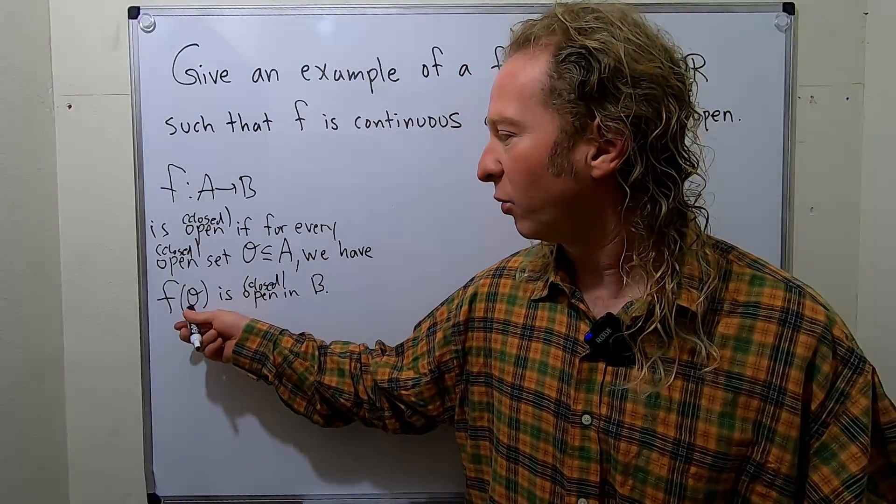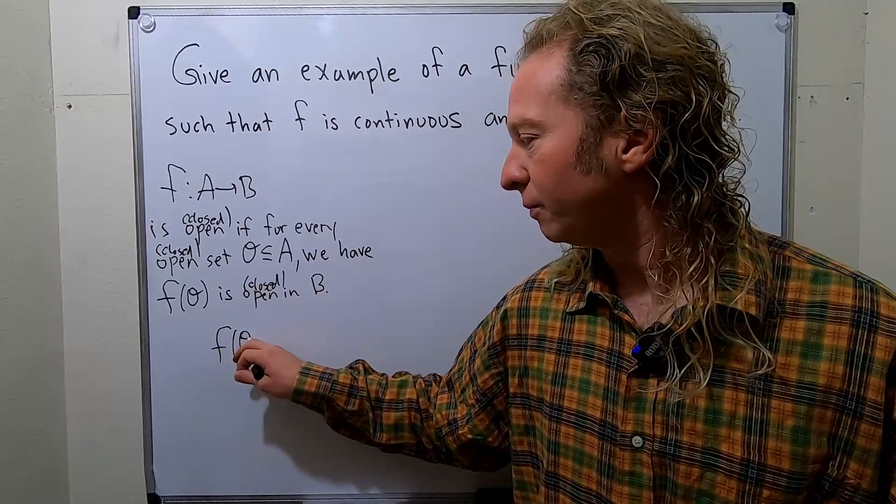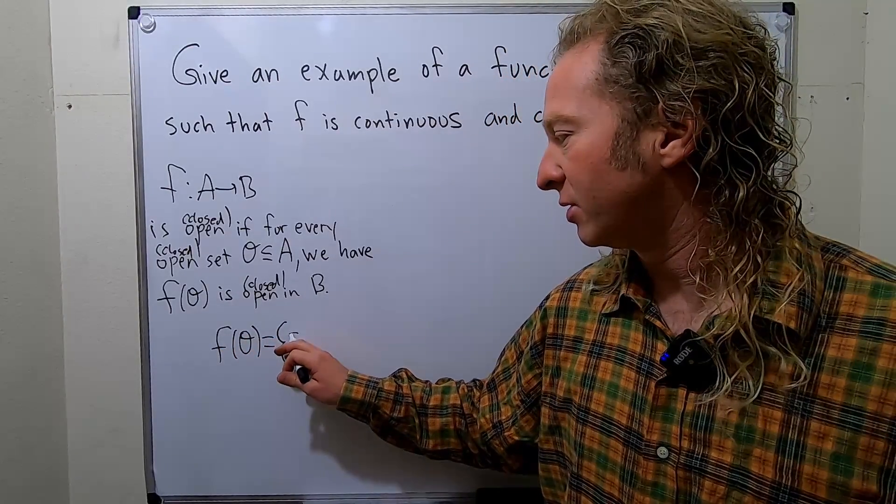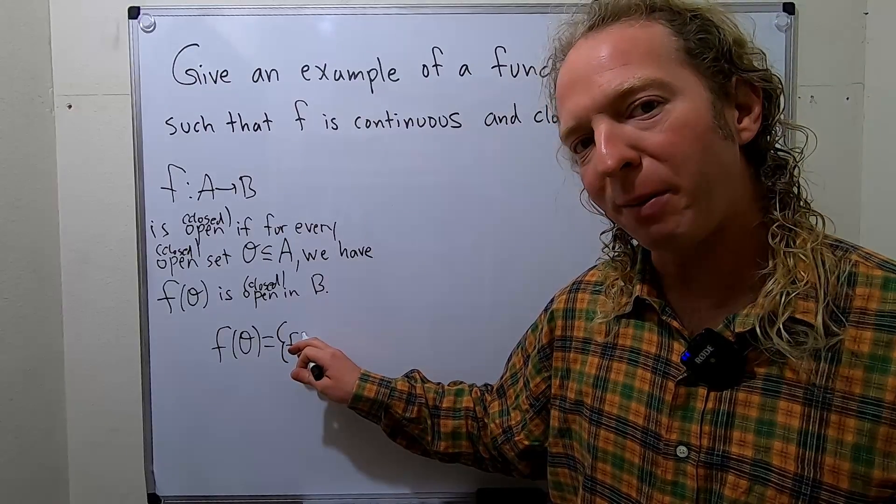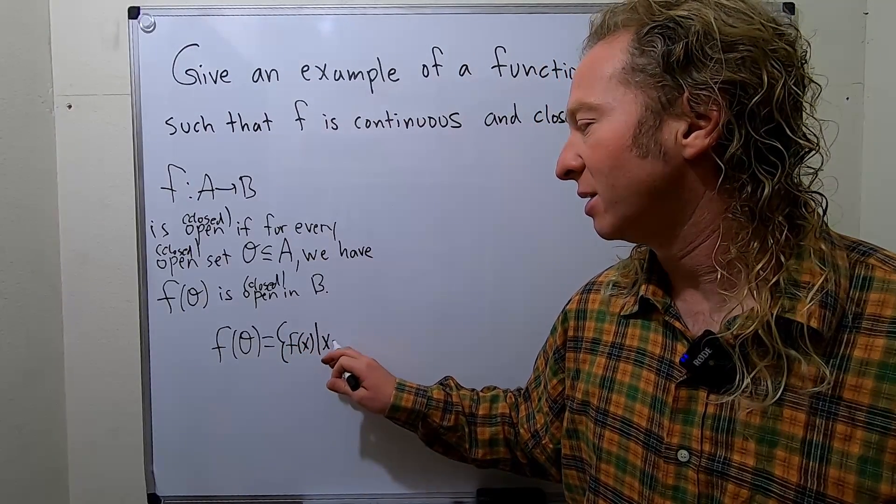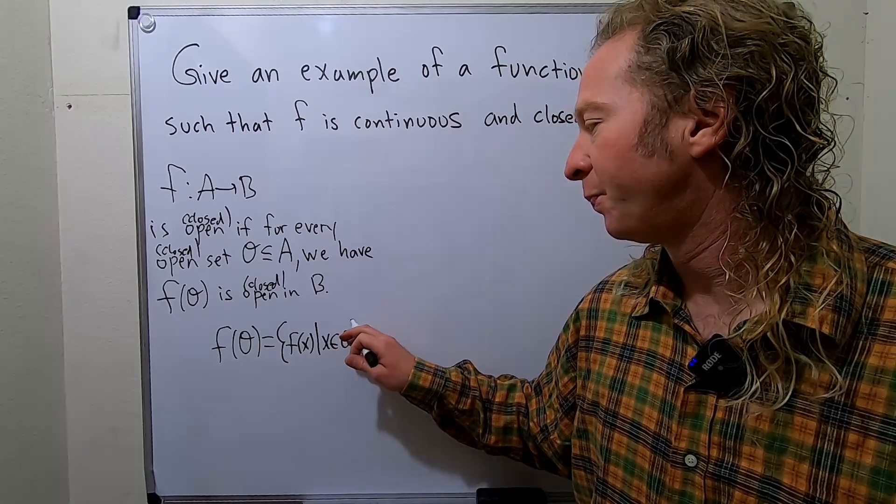So what is this set? So f of o, as a reminder, this is going to be all the y values. So it's the elements of the form f(x) such that x is in o.